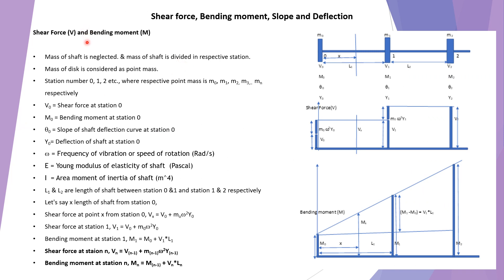Now let us understand shear force and bending moment. You can refer to the pictures on the right side. Multiple masses can be considered; however, for understanding purposes a limited number of masses are shown. The assumptions are: the mass of the shaft is neglected, meaning whatever mass the shaft has must be distributed at stations. Mass of the disk is considered as a point mass, and mass of the shaft is divided into respective stations.